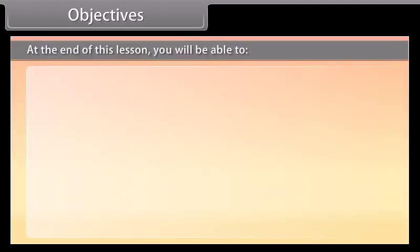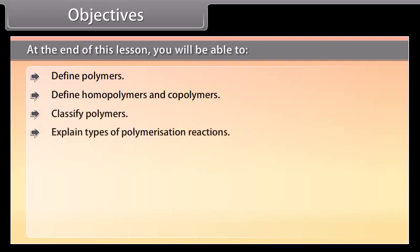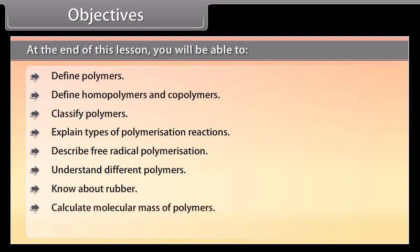At the end of this lesson, you will be able to: define polymers; define homopolymers and copolymers; classify polymers; explain types of polymerization reactions; describe free radical polymerization; understand different polymers; know about rubber; calculate molecular mass of polymers; and define biodegradable polymers.